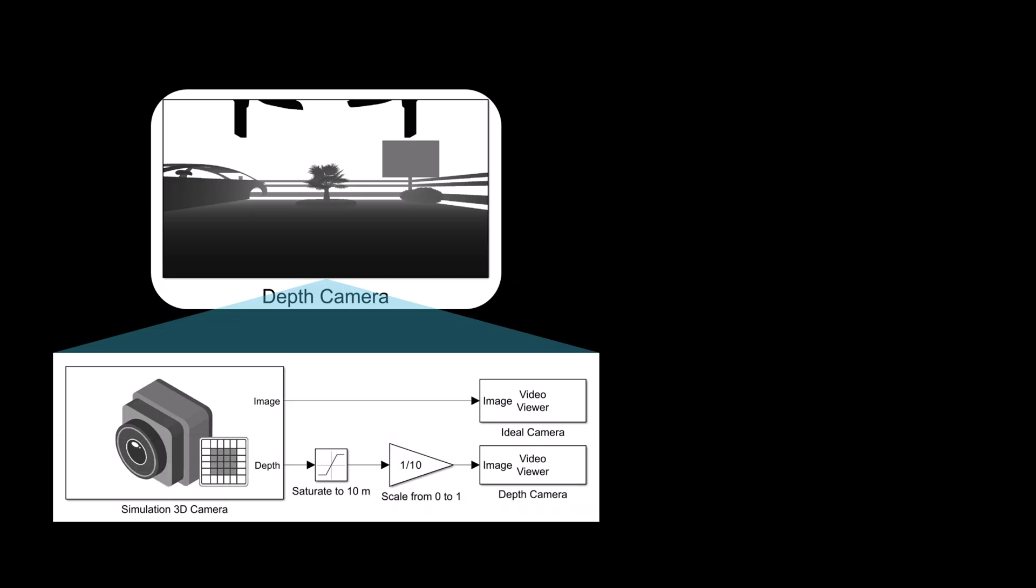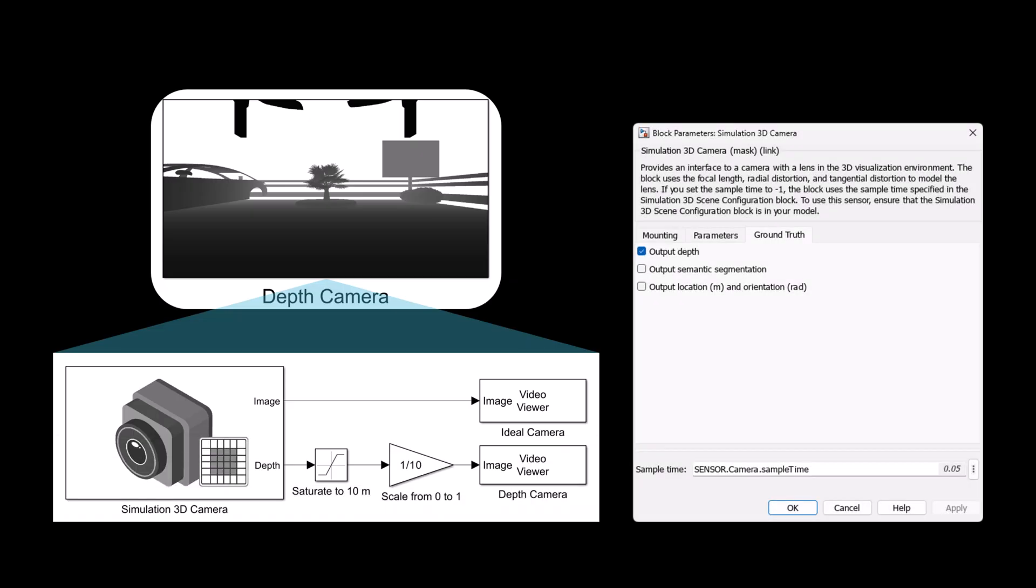Next, we'll move on to the depth camera. The depth information is derived from the ideal camera we discussed earlier, and then scaled to a range of 0 to 1 for visualization.